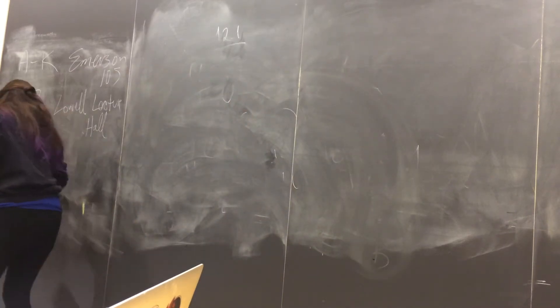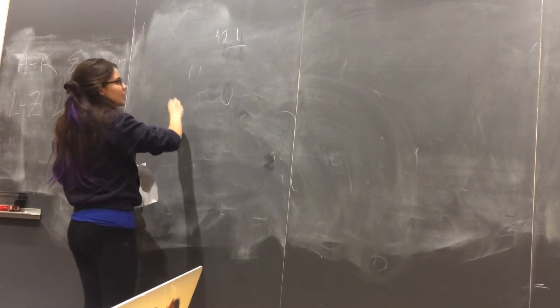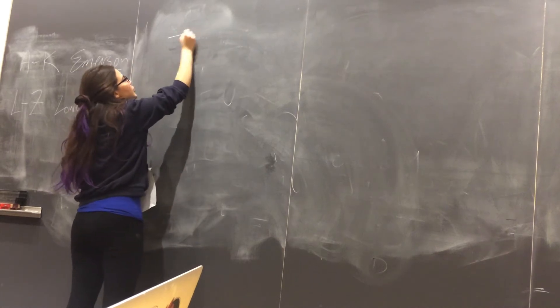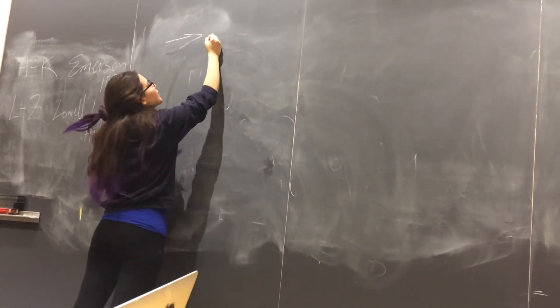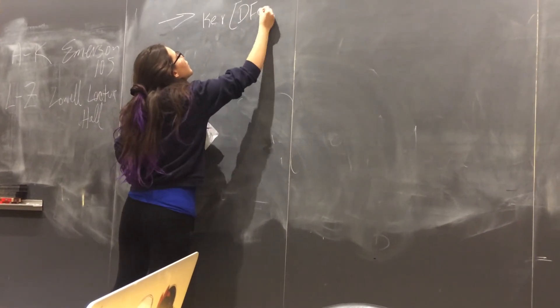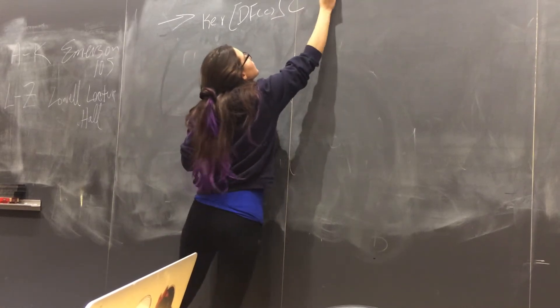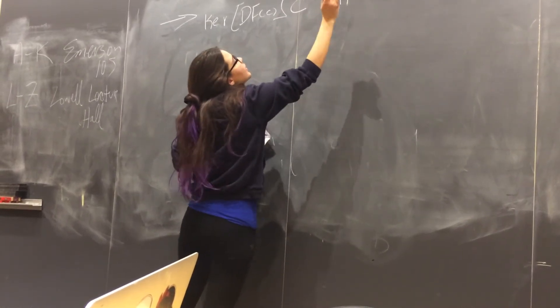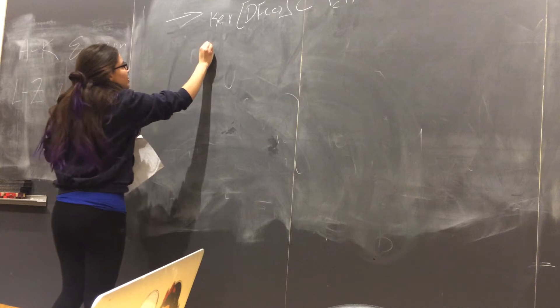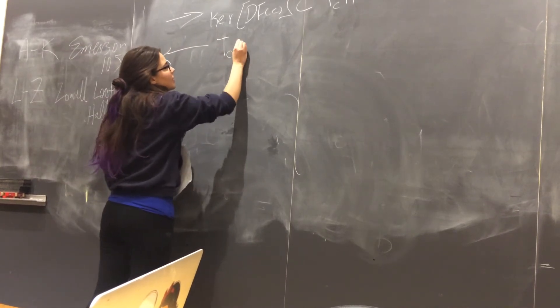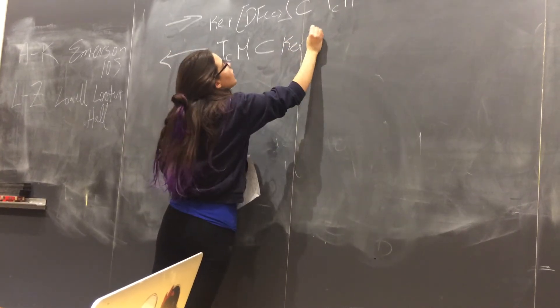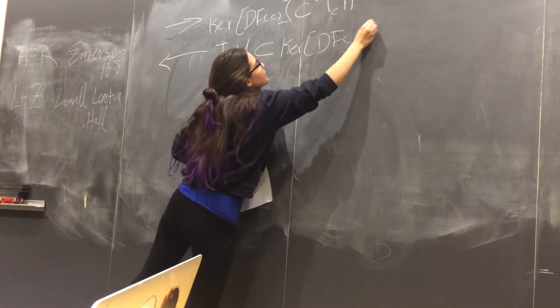We're proving this in two parts. Because we want to prove that the tangent space is the same as the kernel, we are going to prove it this way. First showing that the kernel of DFC belongs to the tangent space M at the point C, and also proving that TCM is in the kernel of DFC.